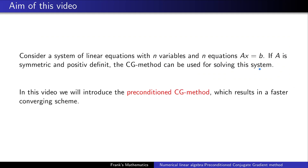What's the aim of this video? We start with a linear system Ax equals b and we assume that A is a symmetric and positive definite matrix, hence the conjugate gradient method is a suitable method for solving such problems. However, the CG method can be improved by using splitting methods inside the conjugate gradient method as a preconditioner, hence the name preconditioned conjugate gradient method.